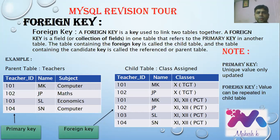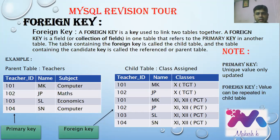In the child table, Teacher ID is assigned as a foreign key; in the parent table, Teacher ID is the primary key. In the parent table, records like 101-MK Computer, 102-JP Maths, 103-SL Economics, 104-SN Computer are updated uniquely. In the child table, Teacher ID 101 and 102 appear more than once — for example, MK is assigned to classes 10-DGT, 11, 12-PGD — showing repeated records in the child table.